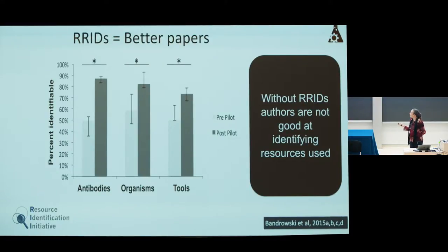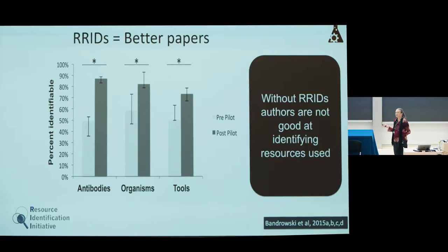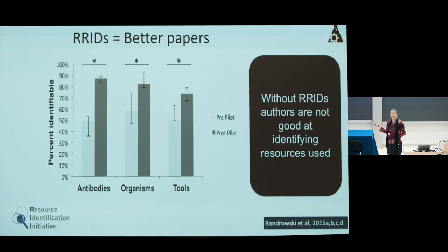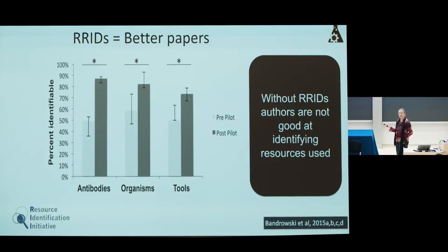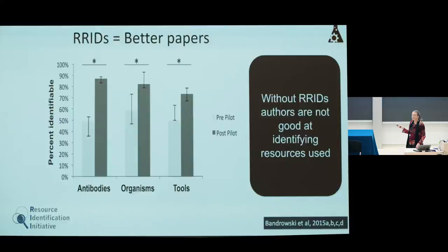Why would we ever want to do this? We ran a study at the end of the pilot project, around 2014–2015, where we gathered the first 100 papers and analyzed them. Looking at pre-pilot — the same exact journals but the issue before the RRID initiative started — 50% of the time you could not find antibodies. But in the issue after, when we started asking, magically you could find 90% of antibodies. This is a big result. It's true with organisms and it's true with tools. Authors are quite good at identifying what they used, as long as they're asked.